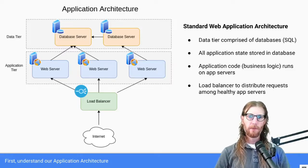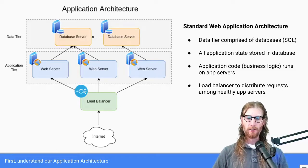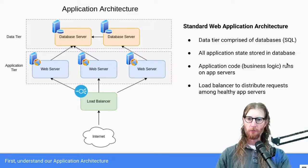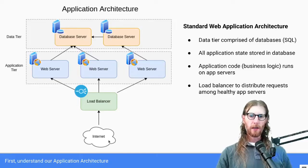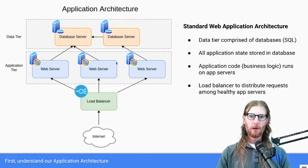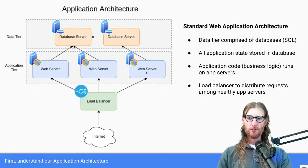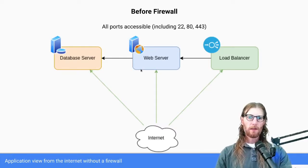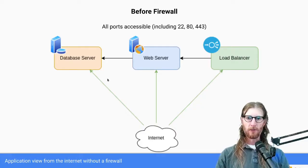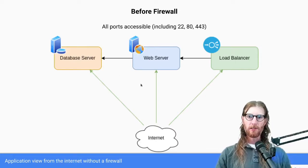Before we talk about what a jump box is, let's briefly talk about the problem that jump boxes are trying to solve. This is a pretty typical application architecture — a realistic, real-world production app. User traffic starts at the internet, hits a load balancer which distributes traffic among three or more replicas, and each replica also has a database server it talks to where application state is stored. So we've got a load balancer, a web server, and a database server.